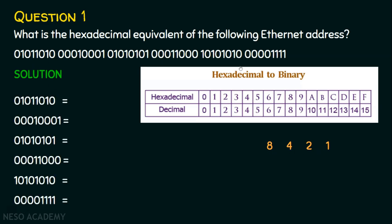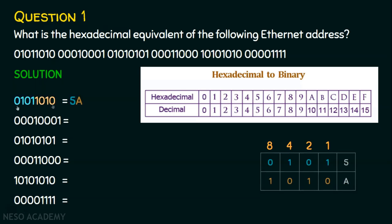Let's take these 6 bytes and place them in a table. We focus on the first byte. This first byte has 2 hexadecimal characters — or 2 hexadecimal digits — because the first 4 bits represent digit 1 and the second 4 bits represent digit 2. The hexadecimal equivalent for 01011010 is 5A.